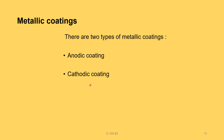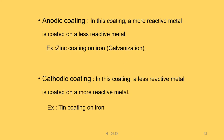Anodic coating: a more reactive metal is coated on a less reactive metal. Because oxygen preferentially attacks the more reactive coating metal, the underlying less reactive metal is protected from corrosion. For example, zinc (more reactive) is coated on iron; zinc acts as the anodic coating and protects the iron.